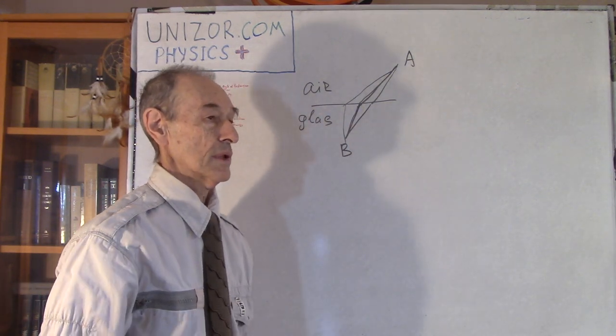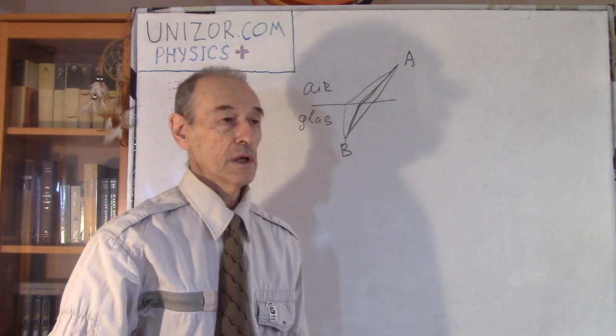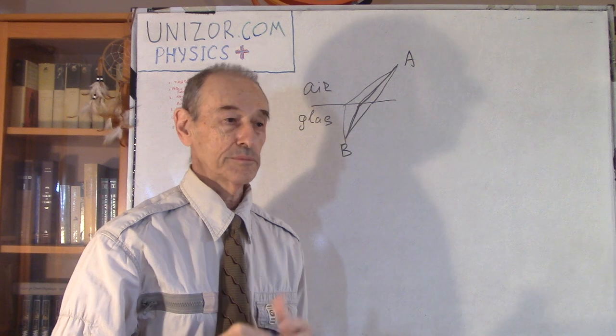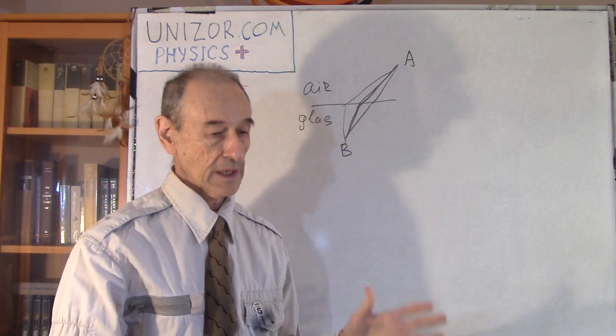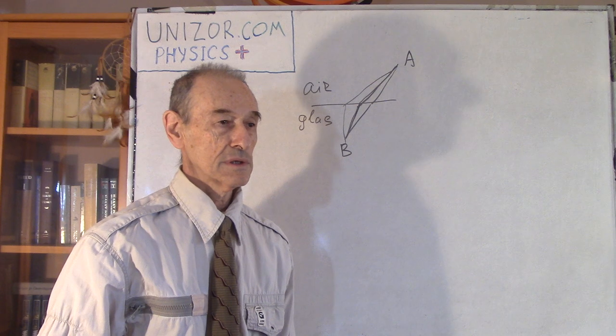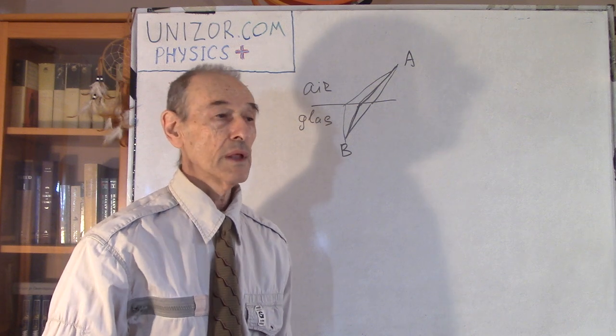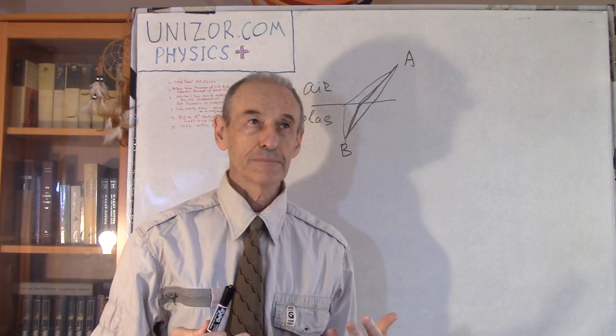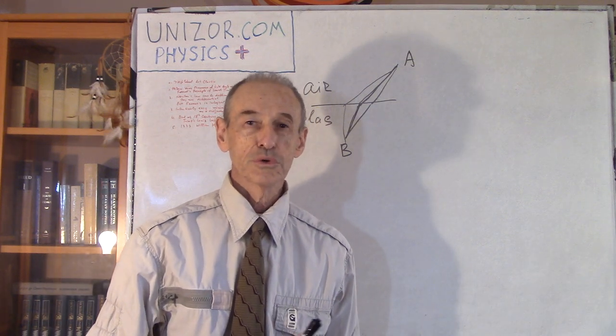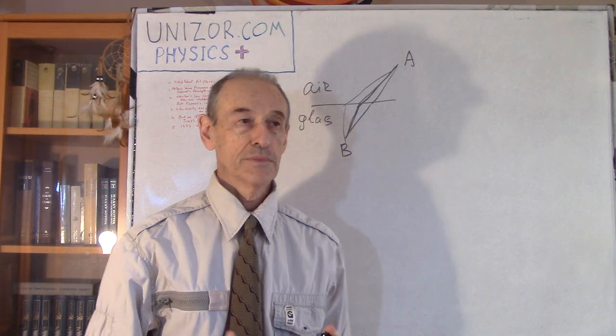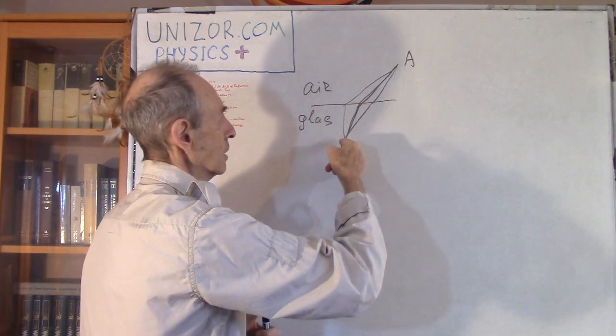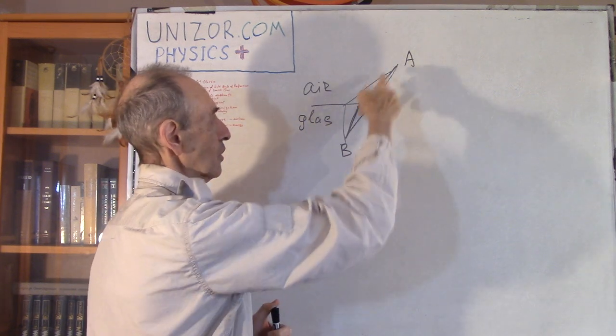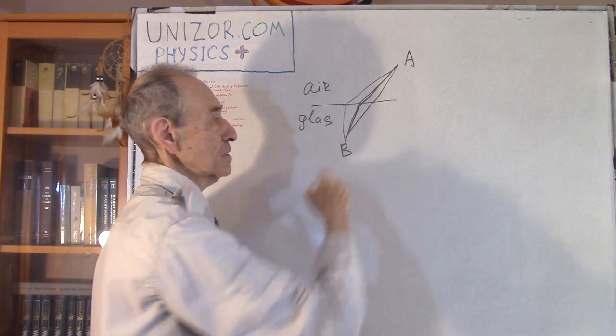Well, some time ago, a very talented mathematician who had some other professions called Fermat, suggested a principle which seems to be very easy to comprehend, that the light will go in such a way that the whole time it takes from A to B is minimum.